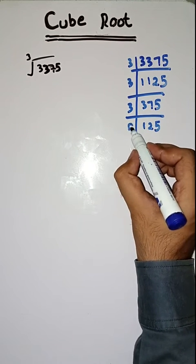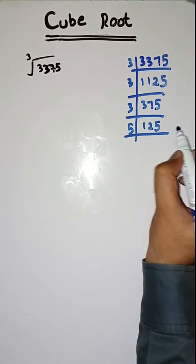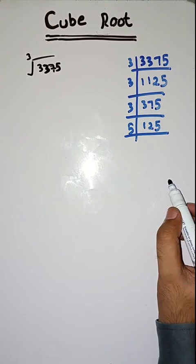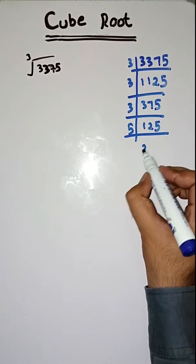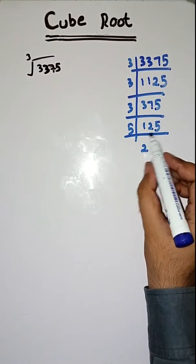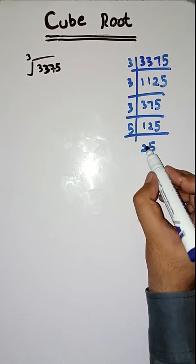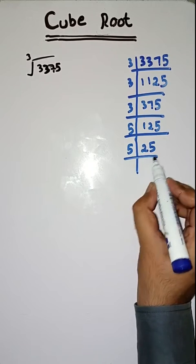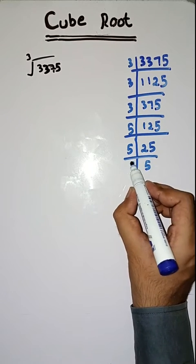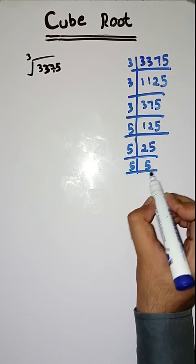Now with 5. 5 times 2 is 10. 25 — 5 times 5 is 25. 5 times 5 is 25. 5 times 1 is 5.